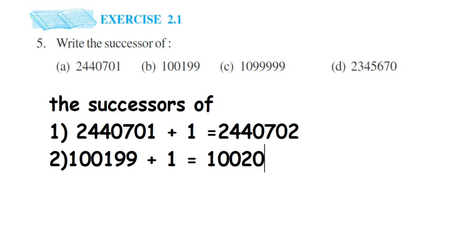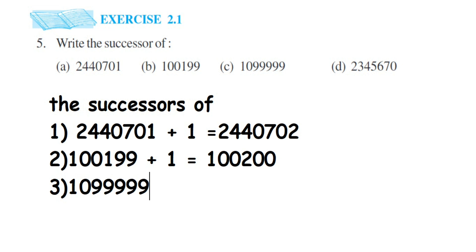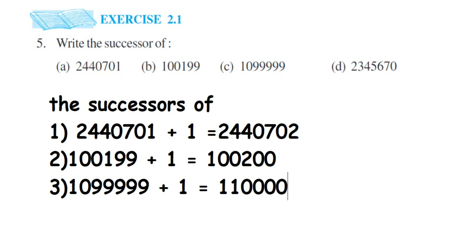The next one: we have 1059999. To find the successor we add one to it. Again we have a nine, so when adding there will be a carry passed to the previous number. If you observe, we have 99999 at the end, so when you add one it becomes one lakh. So the total answer will be 1060000, which is 11 lakh — written as 11 followed by five zeros.